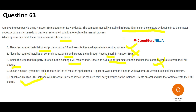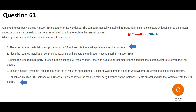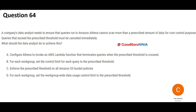Option D is talking about DynamoDB — it says we will store the list of applications and trigger a Lambda function with DynamoDB to install the software. Nobody does this. Thumb rule: whenever we talk about installing something, think about bootstrap actions and think about AMI. So the two correct answers are A and E.